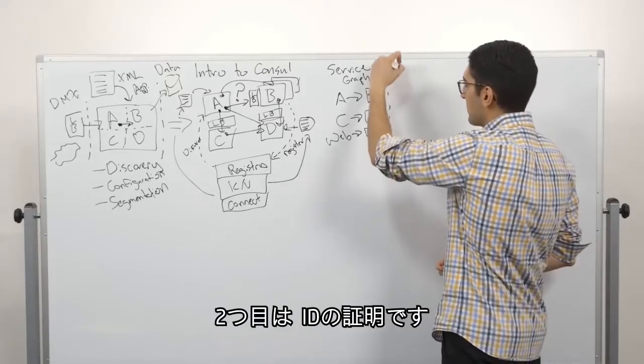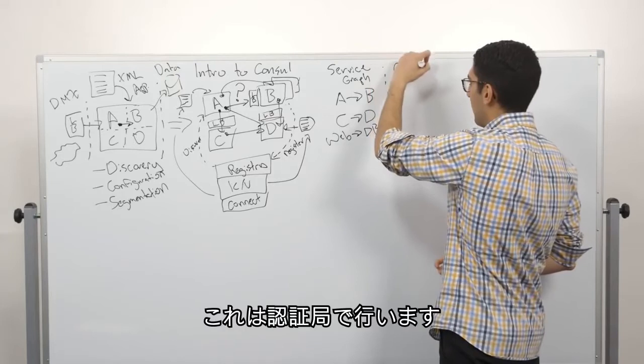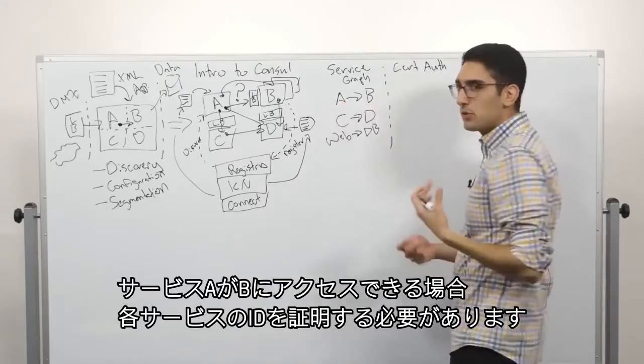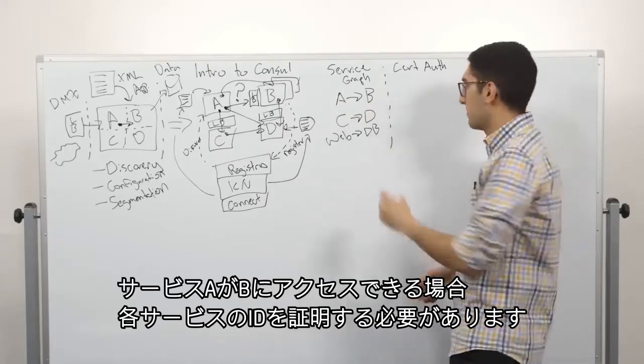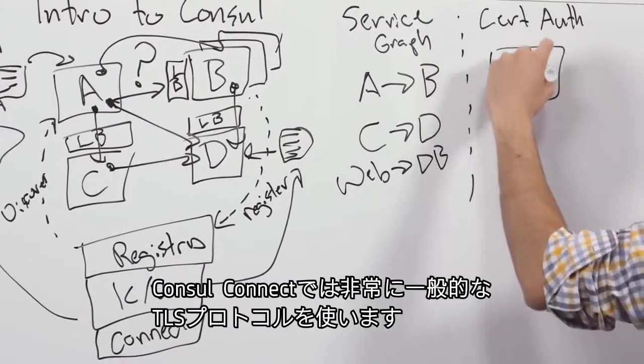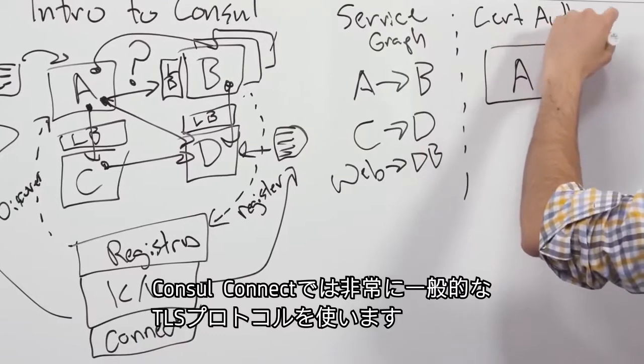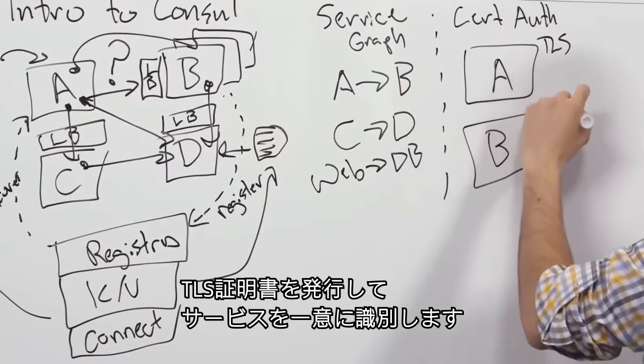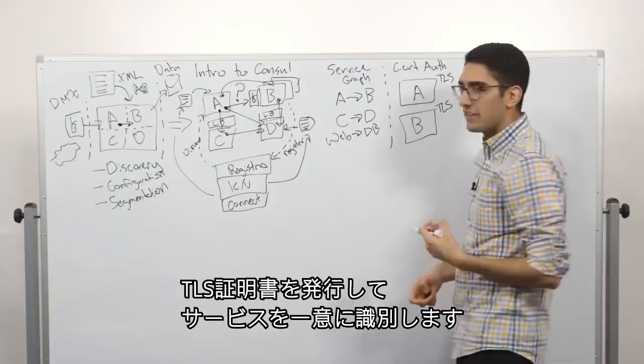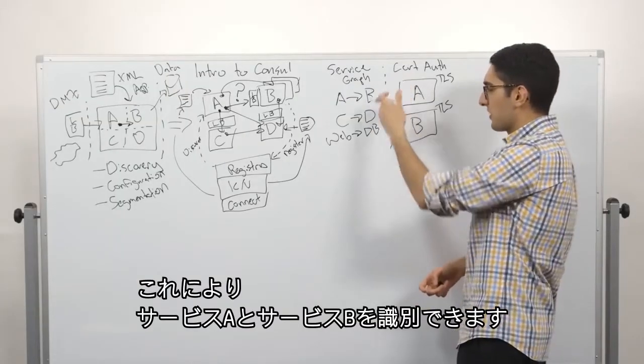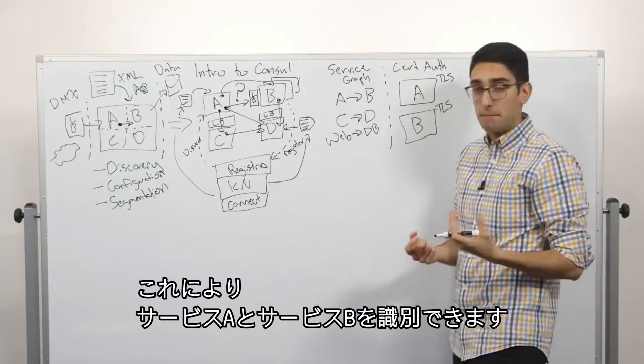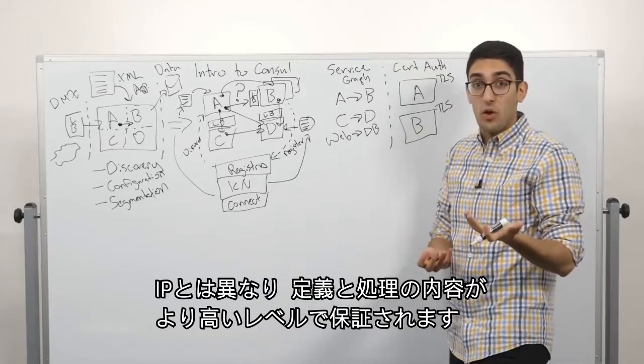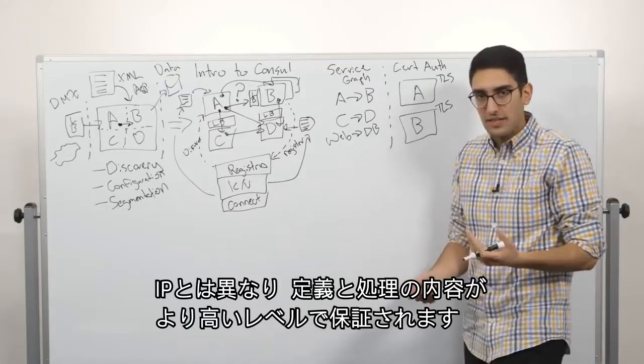The next part of this is how do we assert identity? And this comes from a certificate authority. So when we say service A can talk to service B, how do we know what is service A and what is service B? The approach Consul Connect takes is to tie this back into a very well-known protocol, TLS. So we issue TLS certificates that basically uniquely identify these services. So we can uniquely say this is service A and this is service B, unlike saying there's an IP and we don't actually know what's running at the IP with any strong guarantee.